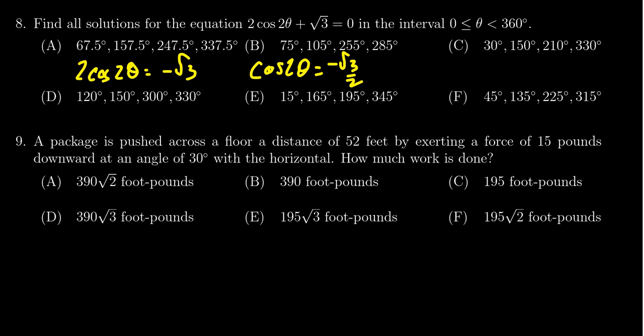So cosine is equal to negative in the second and third quadrant. When is it equal to root 3 over 2? We're doing this in degrees. Cosine will equal positive root 3 over 2 in the first quadrant. That happens at a 30 degree angle. So we're looking for those angles that reference 30 degrees in the second and third quadrant.